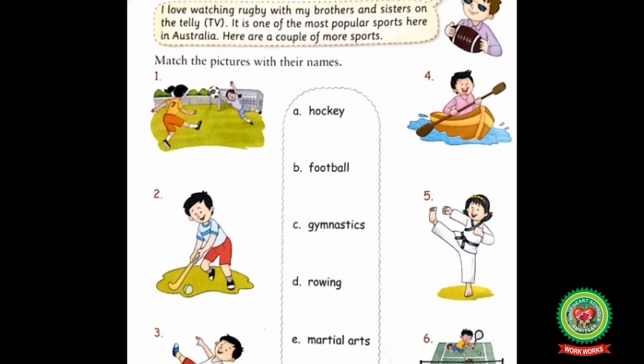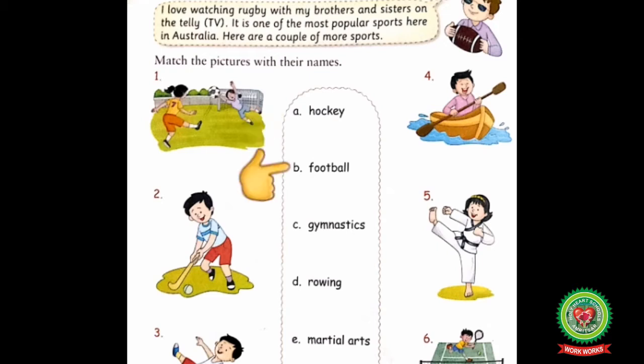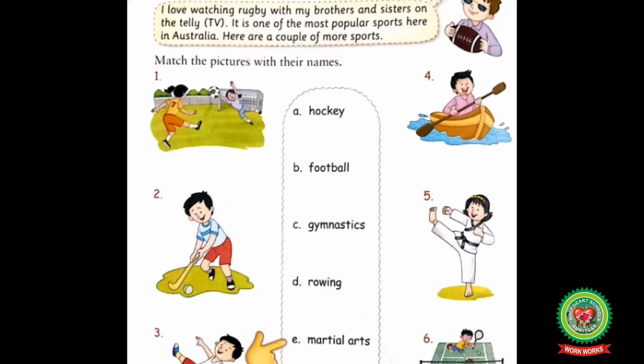Now let's start with the exercise part and discuss these sports. Put your finger here at the first line: 'Match the pictures with their names.' In this exercise we have to match pictures of various sports with the names in the help box. The options are: A) Hockey, B) Football, C) Gymnastics, D) Rowing, E) Martial Arts, and F) Lawn Tennis.